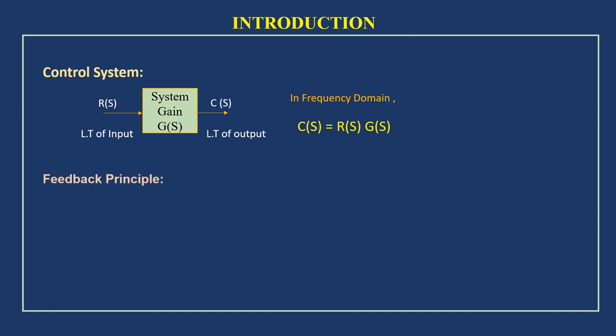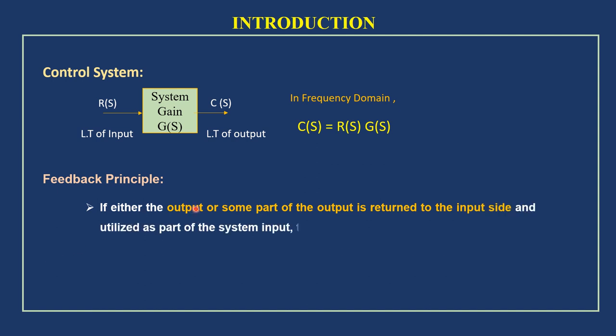About the feedback principle — the feedback system element is used to measure the controlled variable. Using the feedback element, we can measure the controlled variable, and a part of the output can be fed back to the input to control the overall process to get the desired response. If either the output or some part of the output is returned to the input side and used as a part of the system input, then it is known as feedback.